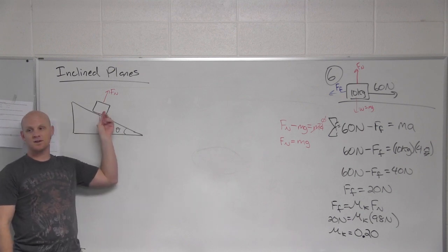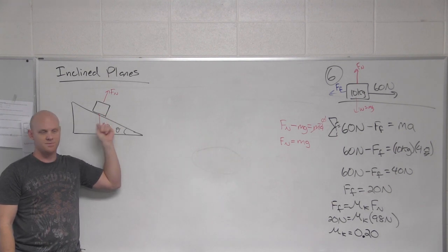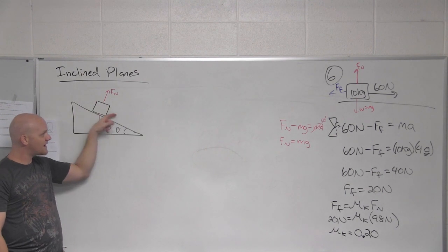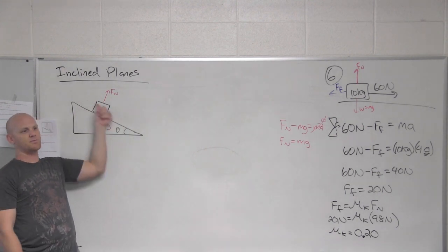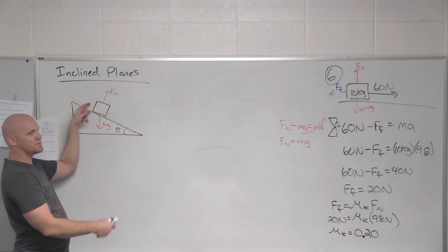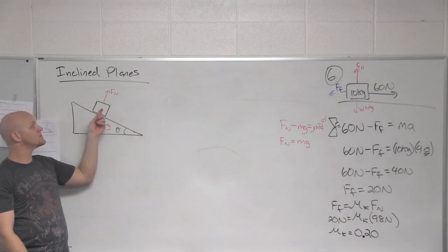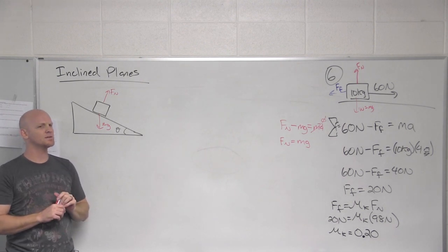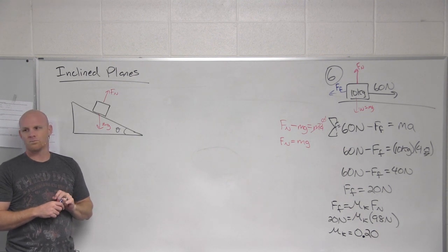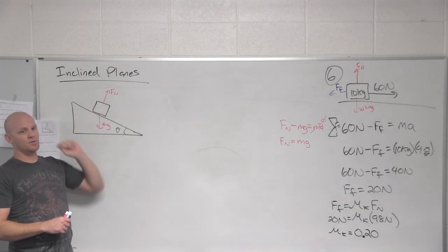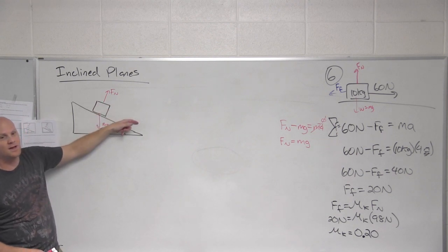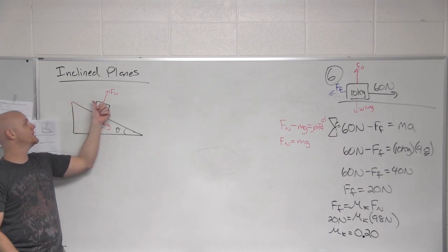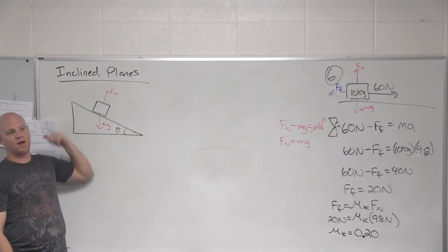If it's not frictionless, you're going to have a friction force. To know which way that points, you'd need to know if the object is moving or just sitting there. If it's sliding down the ramp, friction points up the ramp. If you're pushing it up the ramp, friction points down. If it's just sitting there, you have static friction pointing up the ramp, canceling the component of gravity pulling it down.